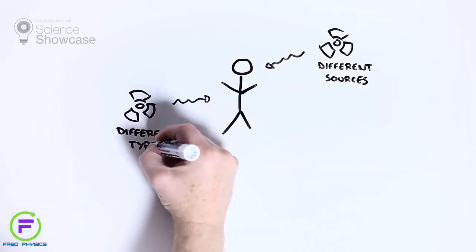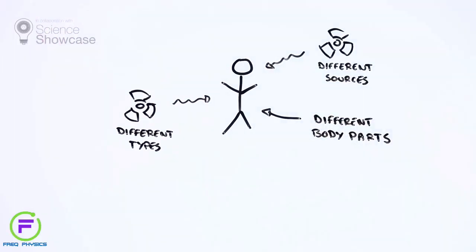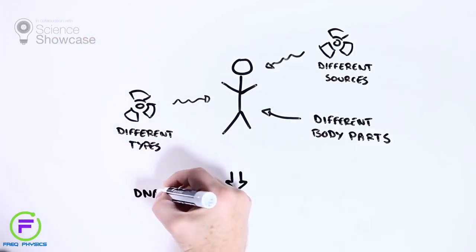And this is where sieverts come in. Sieverts are a measure of the potential biological impact of exposure to ionizing radiation, and in particular, how exposure might lead to health problems by damaging your DNA.